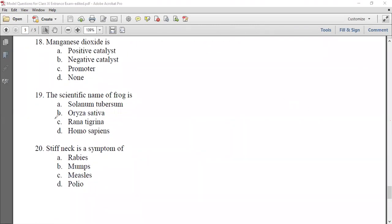So, the scientific name of frog is called Rana tigrina. The question is how to write the scientific name of the animal. The genus name is capitalized, the species name is small. Solanum tuberosum is potato, Oryza sativa is rice, and Homo sapiens is human beings. So, frog is called Rana tigrina.